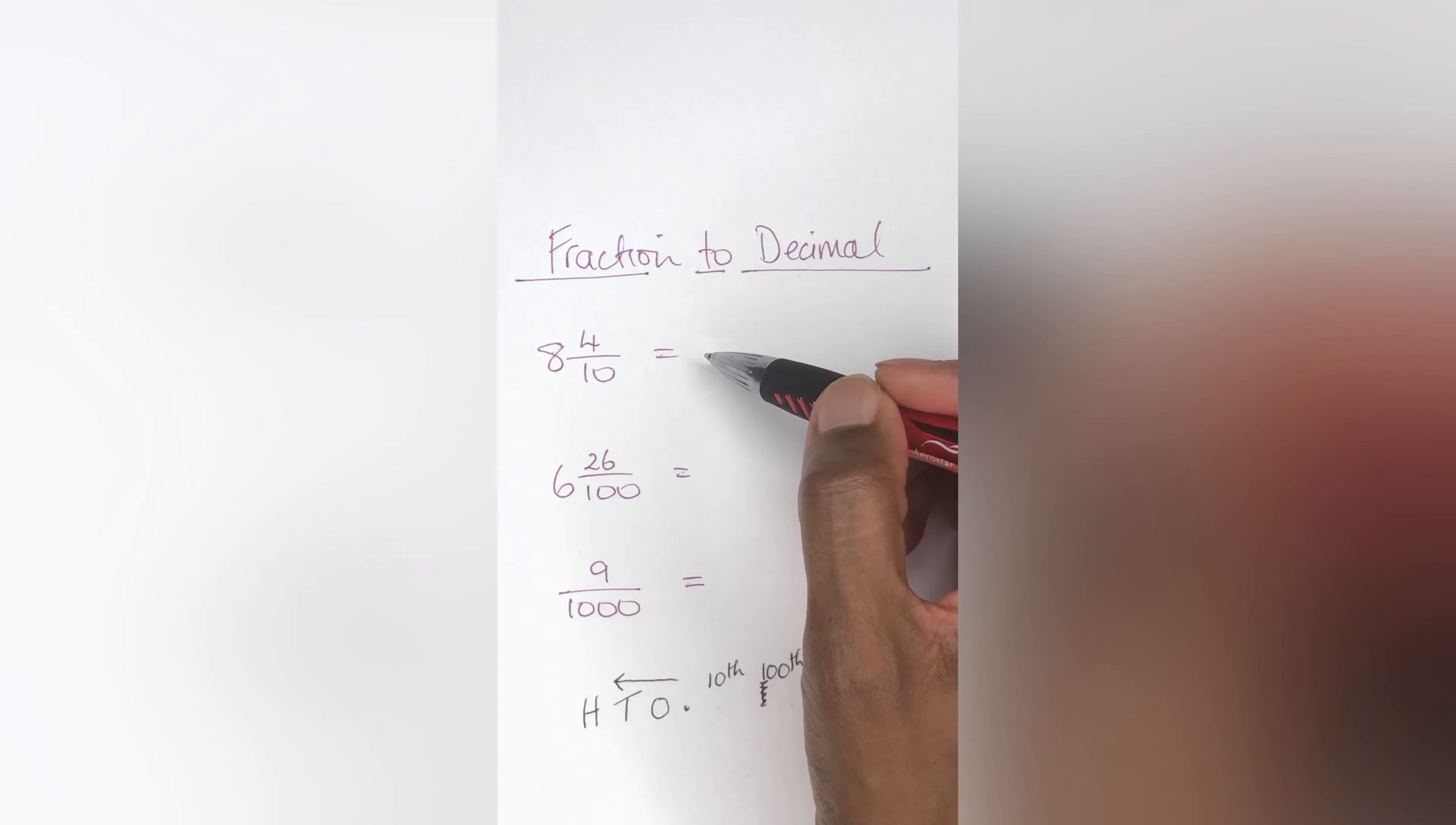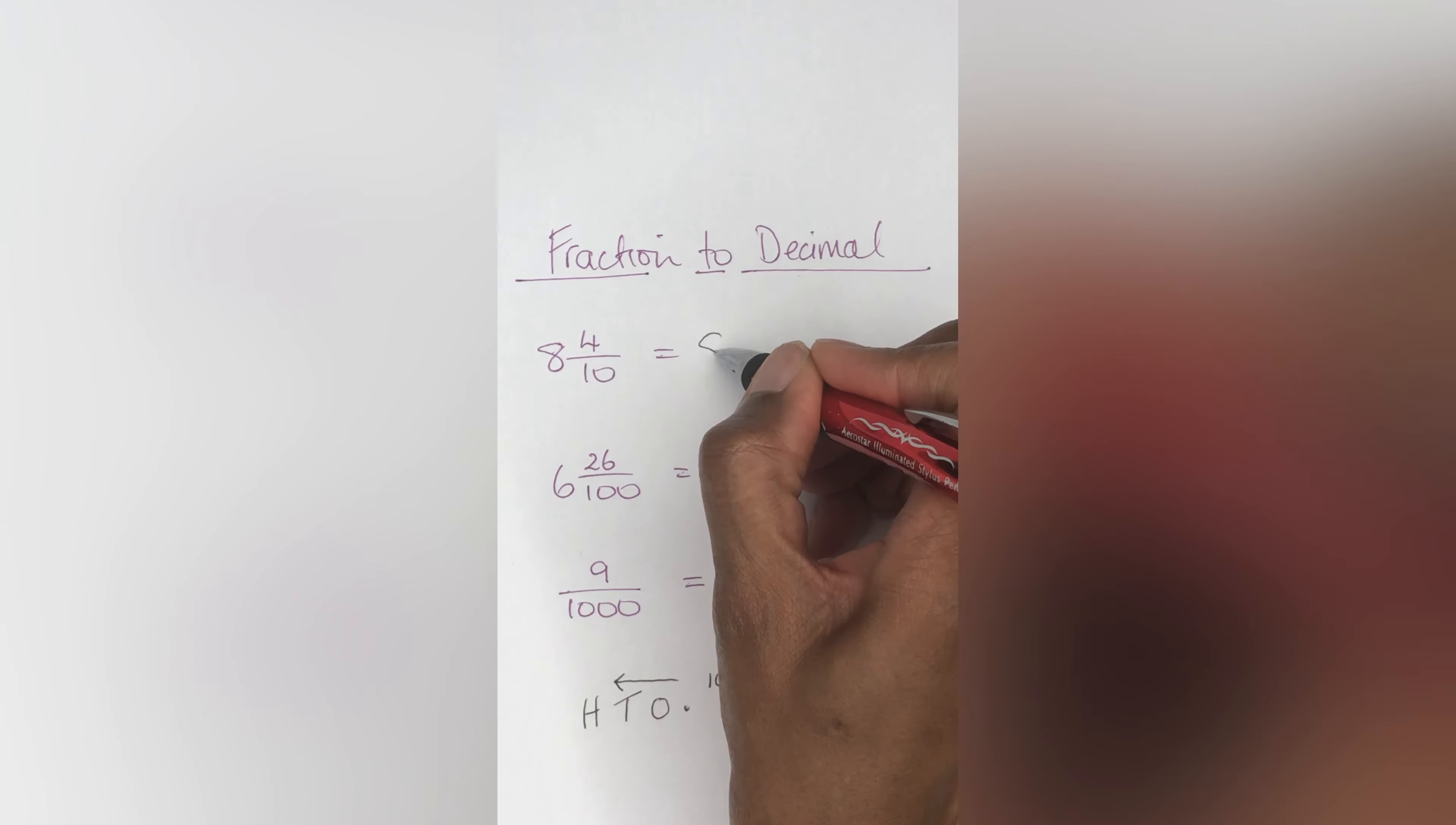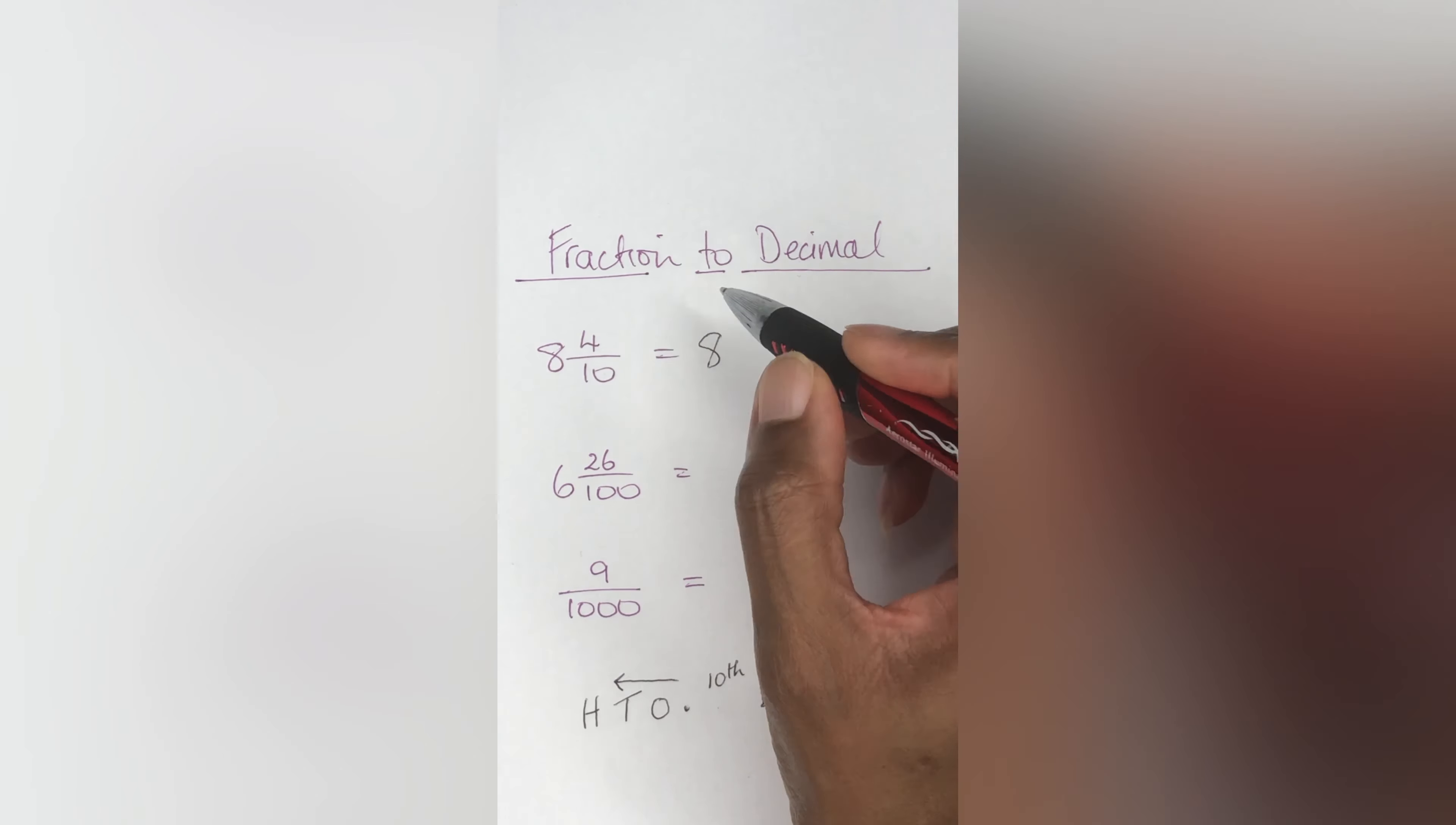Now if we go back to this first question, we see eight and four tenths. How would we write this fraction into a decimal? First of all, this is a whole number, so you would just go ahead and write the eight.